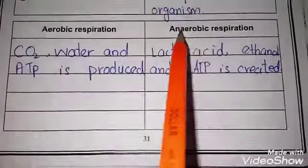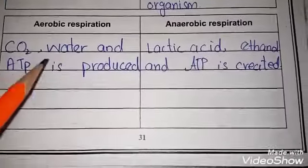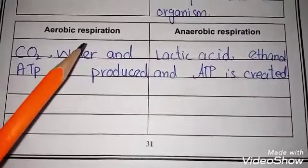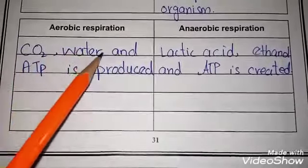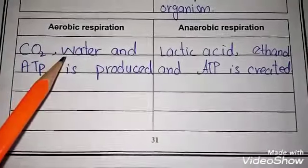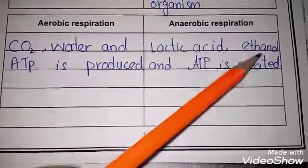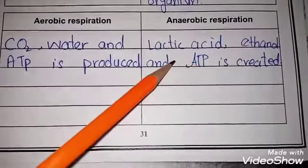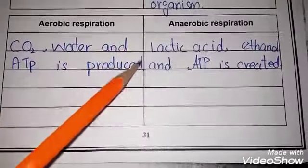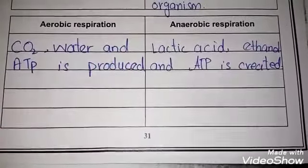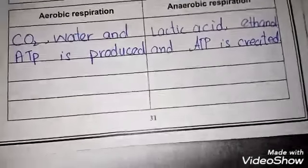Next is aerobic respiration and anaerobic respiration. In both, oxygen may or may not be present. The main difference is that during aerobic respiration, carbon dioxide, water, and ATP are produced. But during anaerobic respiration, lactic acid, ethanol, and ATP are produced. That is the difference between the two. Hope you all understood the differentiations — thank you students.